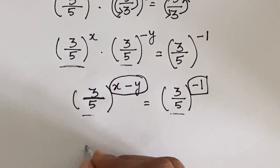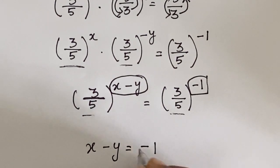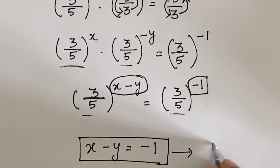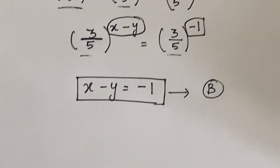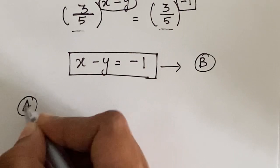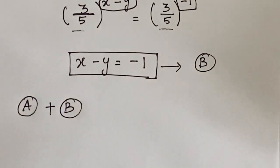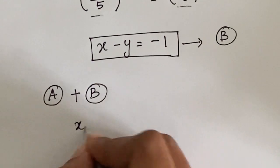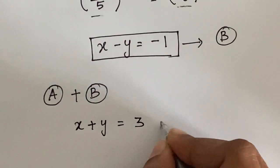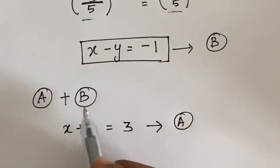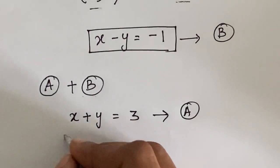Since the bases are the same, we equate the powers and get x minus y equals minus 1. Let this be equation B. So now we have two equations: equation A is x plus y equals 3, and equation B is x minus y equals minus 1.